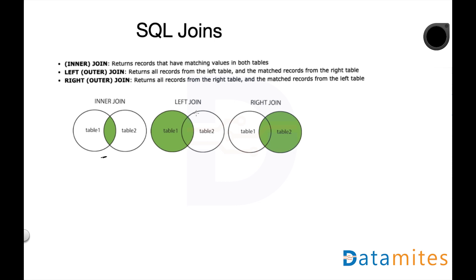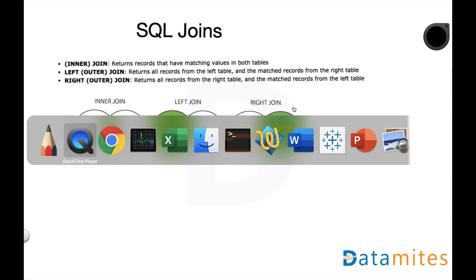Left join takes all the records of table 1 and retrieves the corresponding details from table 2 for the records which are in table 1. If there is a record in table 2 which is not present in table 1, that will not show up. Right join is the other way around — it retrieves all the data from table 2 and the corresponding details from table 1. If there is a record in table 1 which is not in table 2, that will not show up. It makes more sense once we look at the actual tables.